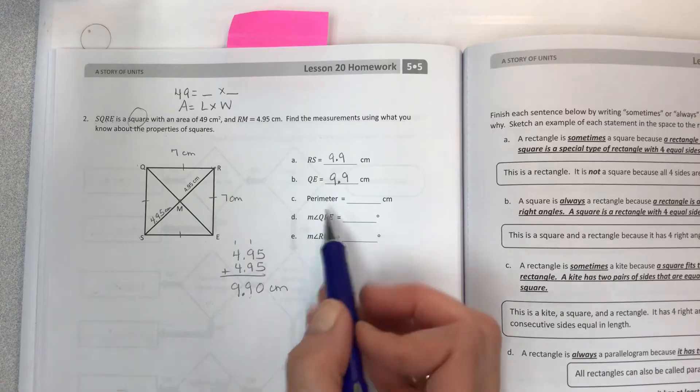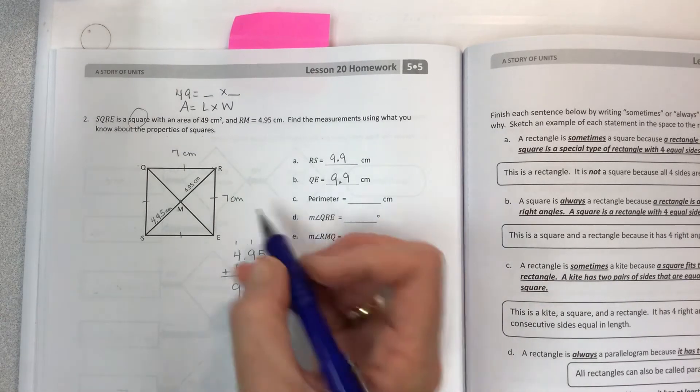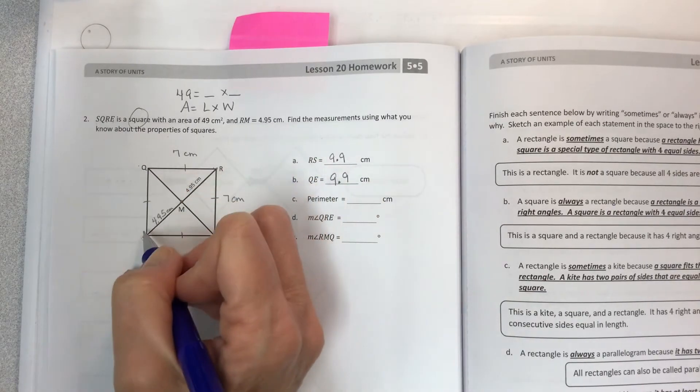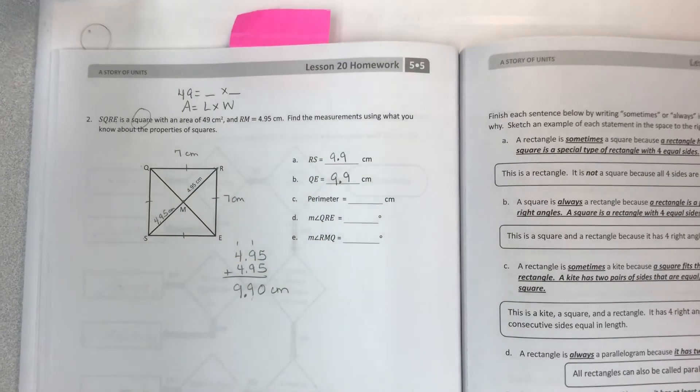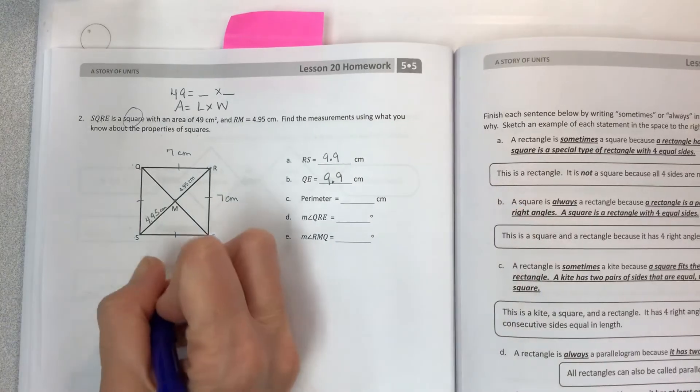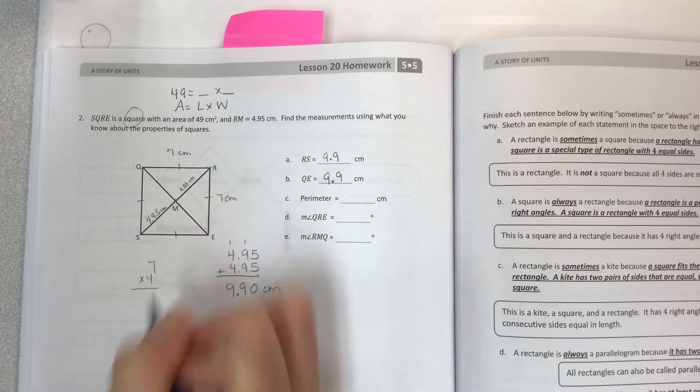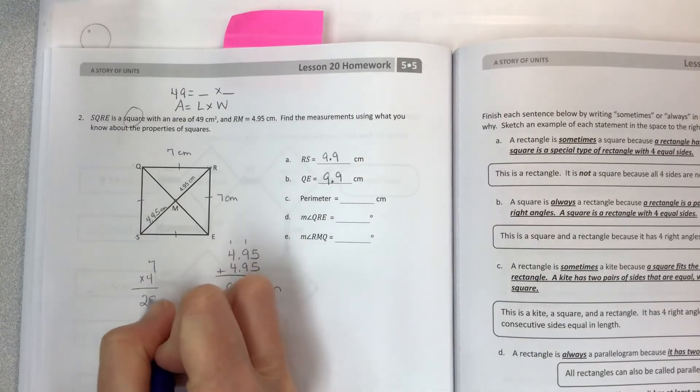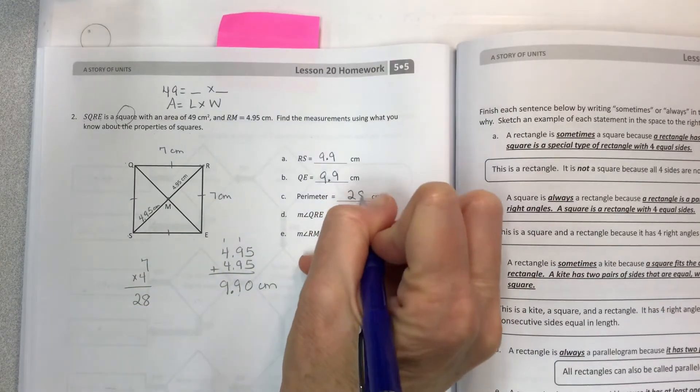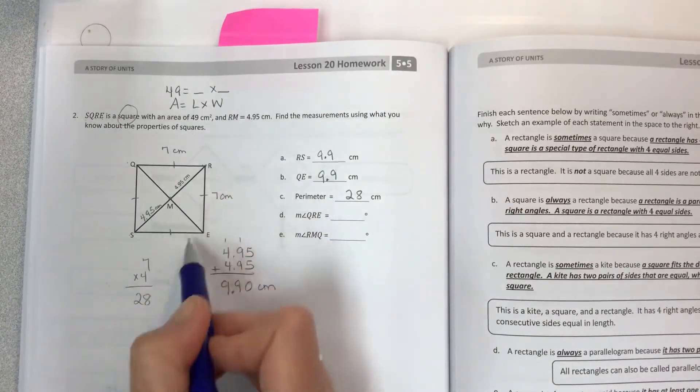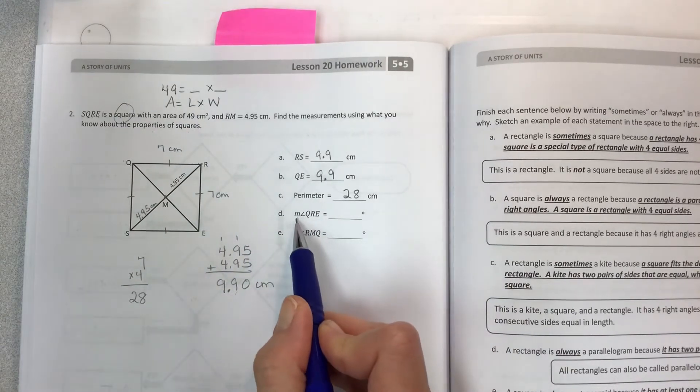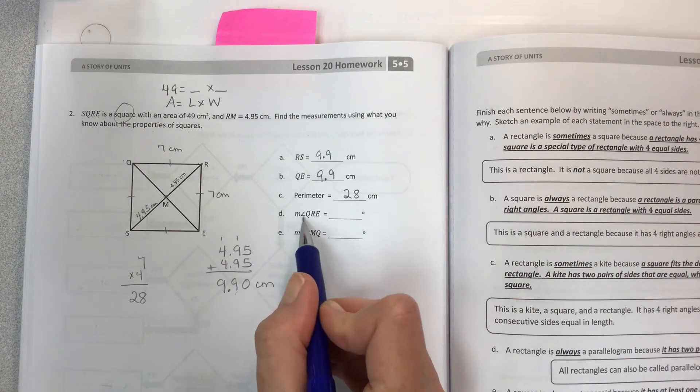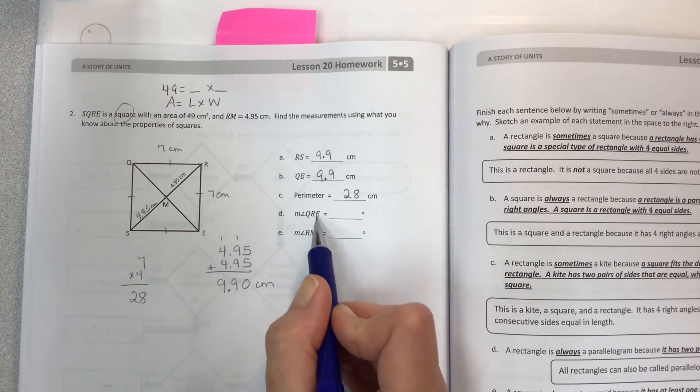Now how about that perimeter? Remember that the perimeter is the distance around the figure. So if one side is 7 and the other side is 7 and then this is 7 and this is 7, then you can do 7 times 4 if you'd like, or you can add up all those sevens, and you will get 28 centimeters all the way around. Now angle M, so the angle, the measurement of the angle of QRE.